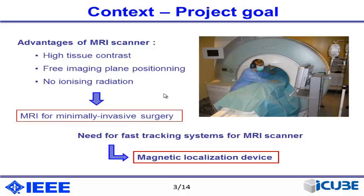In this kind of surgery, the surgeon — here you can see a professor performing an intervention — uses tools like needles and catheters, and must be able to see the tool inserted inside the body on the screen. Up to now, the surgeon asks an assistant outside the MRI room to find the tool by acquiring successive images, which is a very slow method. It would be very useful to have a small sensor giving the position of the tool inside the scanner in order to adjust the image in real time, and that is what we are doing here, thanks to a magnetic localization device.